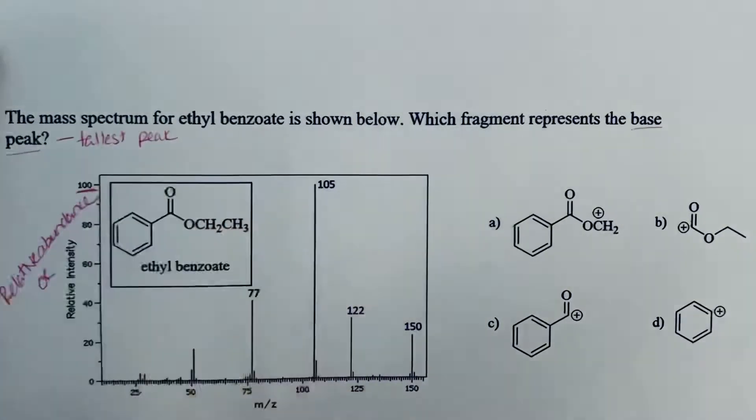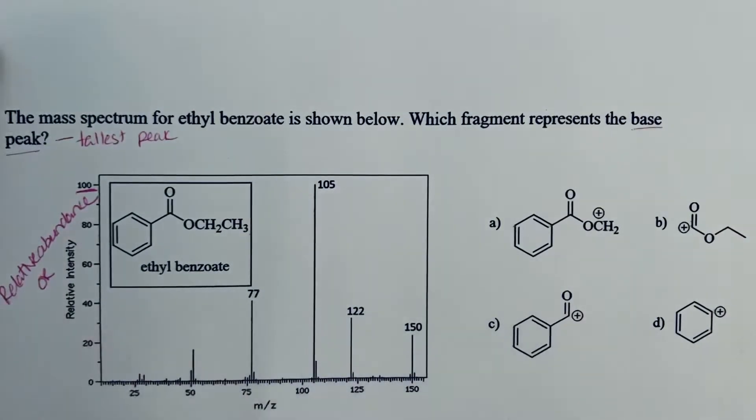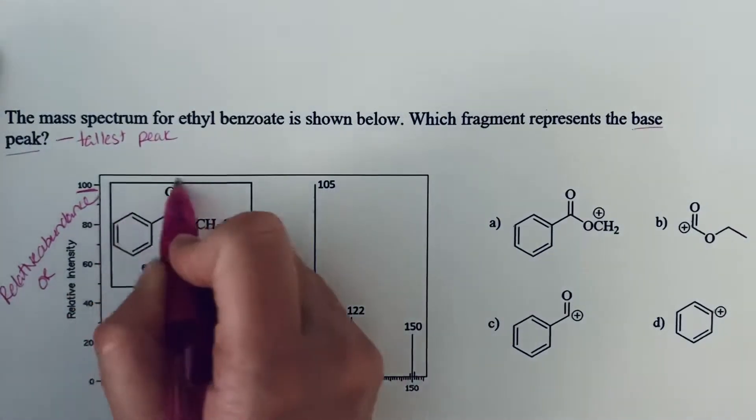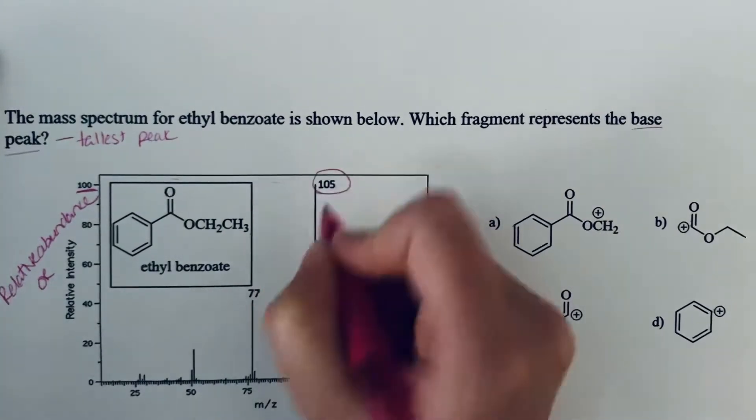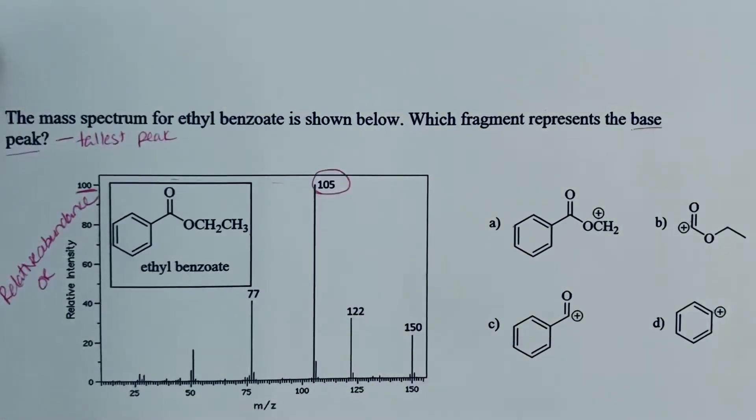At 100%, either relative intensity or relative abundance, the peak that you have there is also your tallest peak. And in this case, we're seeing that it's showing up at 105.